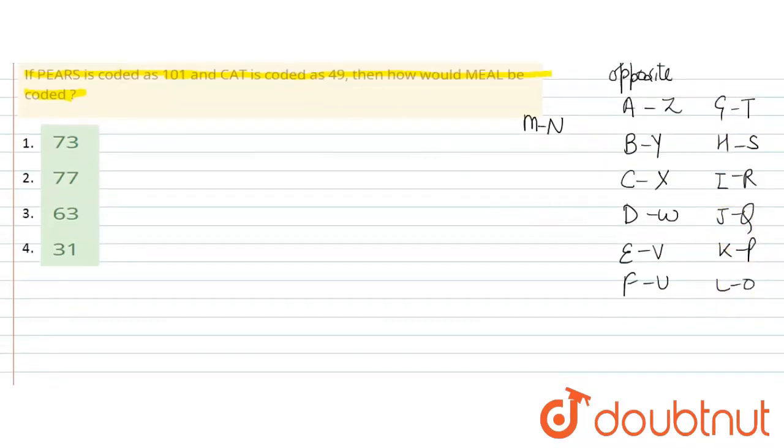Now look here, PEARS code is given. So P, E, A, R, S. For PEARS, whatever vowels are there, write their opposites. So E ka opposite V and A ka opposite Z hota hai. And for the rest, write place values. So P is 16, plus V ki place value 22, plus Z is 26, plus R is 18, plus S is 19.